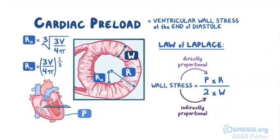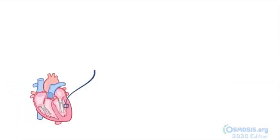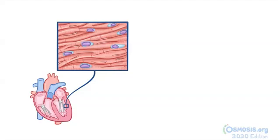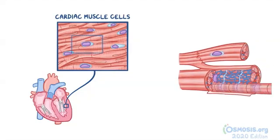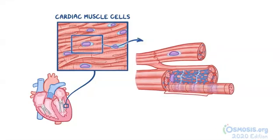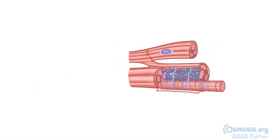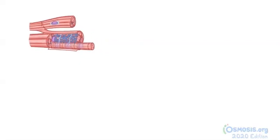Alternatively, preload can be defined as the length of muscle fibers or sarcomeres at the end of diastole. The bulk of the ventricular wall is made up of short, branched cardiac muscle cells. Inside these cells are bundles of myofibrils — long chains of sarcomeres. The sarcomere is the smallest structure capable of contracting, making it the basic contractile unit of muscle.